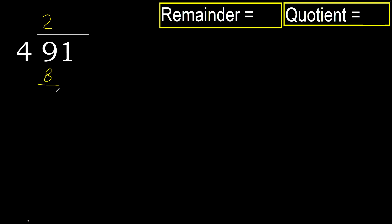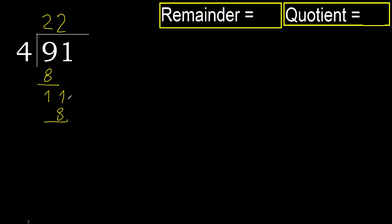Subtract 1, then bring down the next digit: 11. 4 multiplied by 3 is 12, which is greater. 4 multiplied by 2 is 8, which is not greater. Subtract 3 — that is not a number, so finish it.